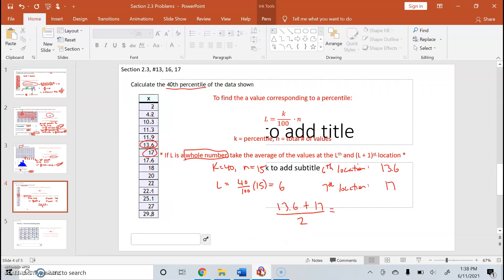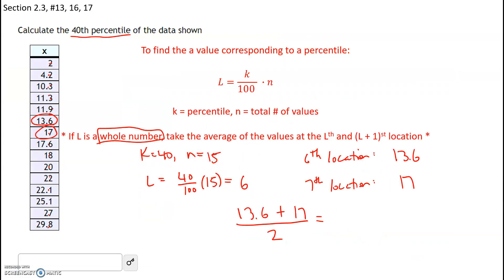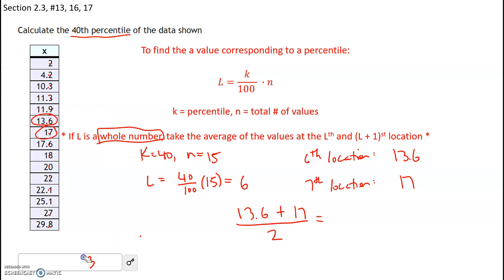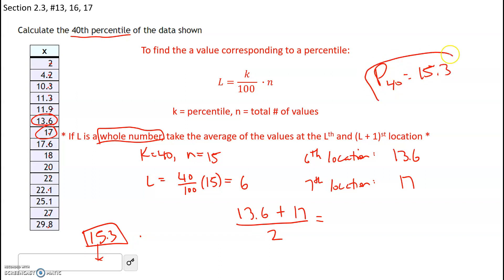So my 40th percentile, P sub 40, is going to equal 15.3.